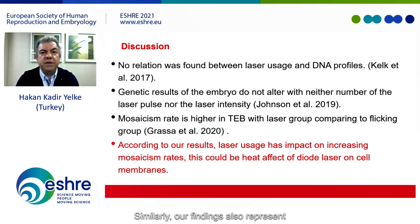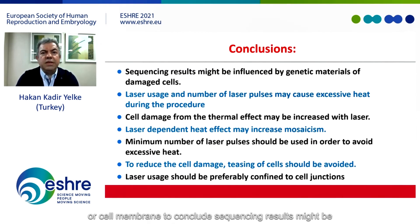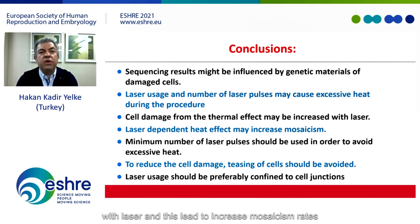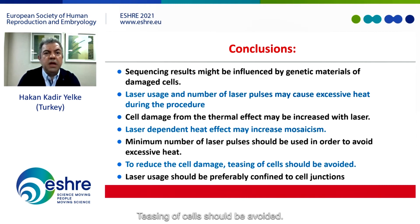Similarly, our findings show that laser usage has an impact on increasing mosaicism rates, which could be the heat effect of the diode laser on cell membranes. Sequencing results might be influenced by genetic material of lysed or damaged cells. Laser usage and number of laser pulses may cause excessive heat during the procedure. Cell damage from the thermal effect may be increased with laser, leading to increased mosaicism rates. A minimum number of laser pulses should be used to avoid excessive heat, teasing of cells should be avoided, and laser usage should be preferably confined to the cell junctions.